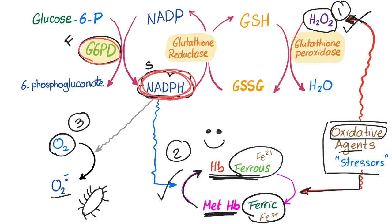That's it for today. Next video we will discuss G6PD deficiency — the most common enzyme deficiency in the world. That's why when your medical school wants to test you about enzymes, guess which enzyme they'll test you on: G6PD, because it's a big deal.